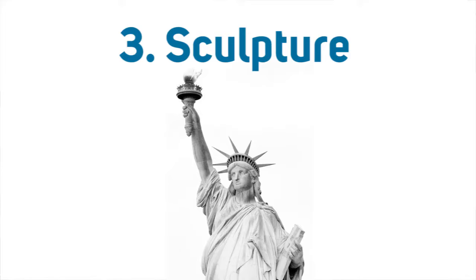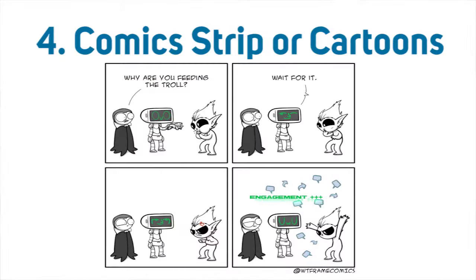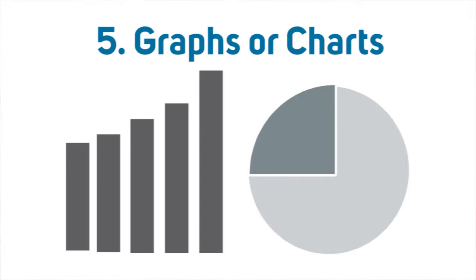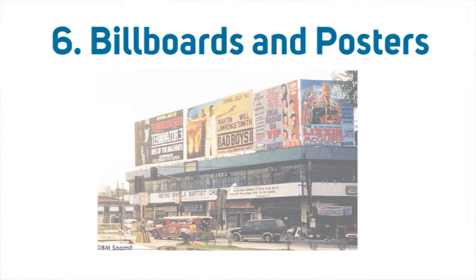Next is sculpture — a three-dimensional artwork created using stone, clay, metal, or other materials. The fourth type is comics or cartoons: illustrations or drawings arranged in a box. Fifth is graphs or charts, which show information or statistics on a certain phenomenon. Sixth is billboards and posters — posters are the same as billboards but smaller in size. These are just some of the types of visual information.